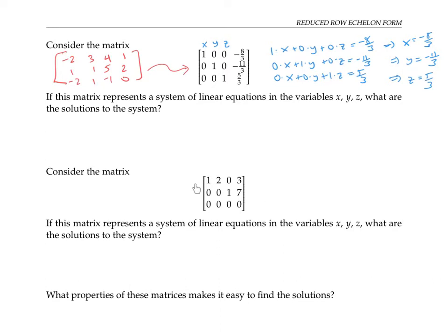Next, let's consider this matrix. If it also represents a system of linear equations in the variables x, y, and z, then what are the solutions to the system? If we write out the equations: one times x plus two times y plus zero times z equals three, and one times z equals seven. The last equation doesn't give us any new information — it just says zero times all the variables equals zero. We can rewrite those equations more simply as z equals seven, and x plus two y equals three.